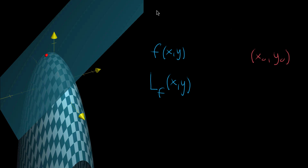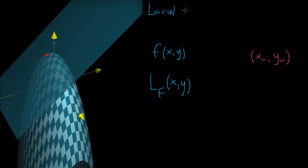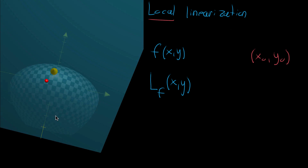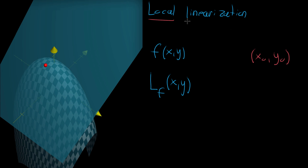This often goes by another name: local linearization. The word 'local' means you're looking at a specific input point — in this case x₀, y₀. And 'linearization' means you're approximating the function with something simpler, something that's actually linear. I'll explain what I mean by linear in just a moment.